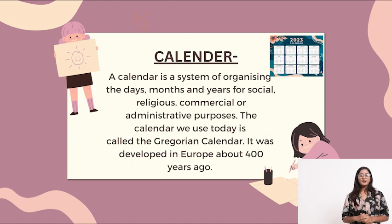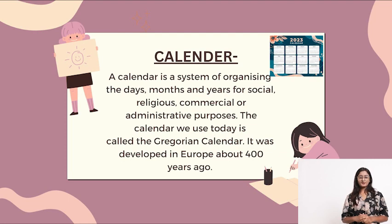Calendar. A calendar is a system of organizing the days, months, and years for social, religious, commercial, or administrative purposes. The calendar we use today is called the Gregorian calendar. It was developed in Europe about 400 years ago.